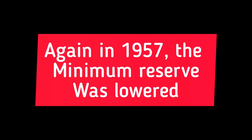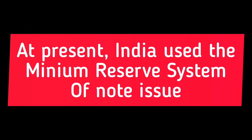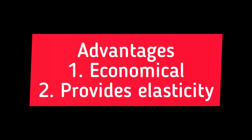Consequently, the RBI Act was amended in 1956 and the Proportional Reserve System was replaced by the Minimum Reserve System. Under the Minimum Reserve System, the issue department of the RBI was required to keep a minimum of rupees 400 crores in foreign securities and rupees 115 crores in gold coins and bullion. However, by November 1957, the RBI Act was again amended and the overall minimum reserve was brought down to rupees 200 crores.